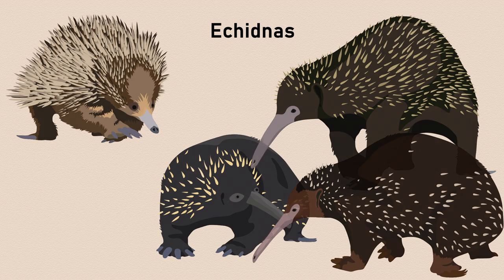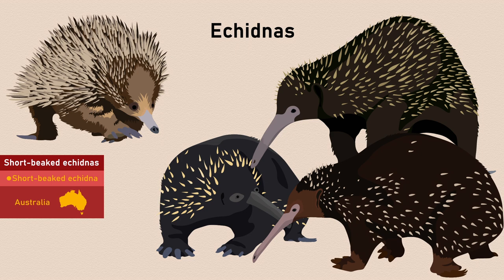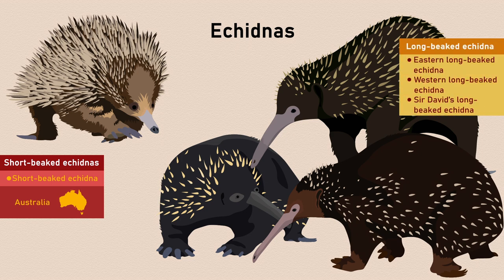Four of these are echidnas, which can be split further into two clear groups. The short-beaked echidnas, featuring one species widespread across Australia, and the long-beaked echidnas, of which there are three, all found on the island of New Guinea.